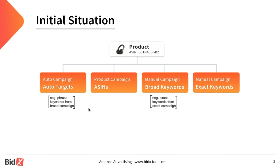Let's take a look at the initial situation. A campaign structure that has been created via Bidx contains an auto ad group, a product targeting ad group, a broad ad group, and an exact ad group.